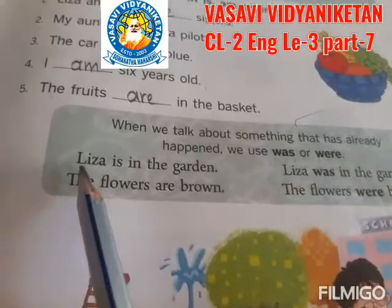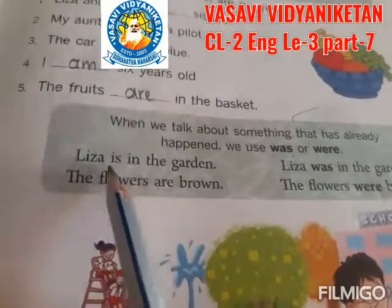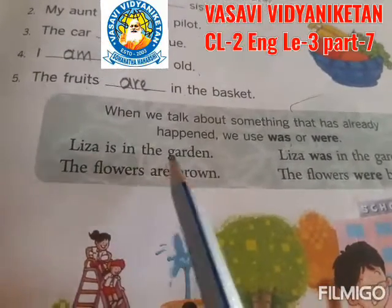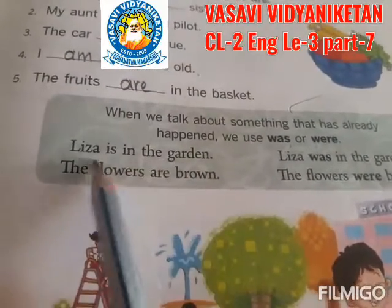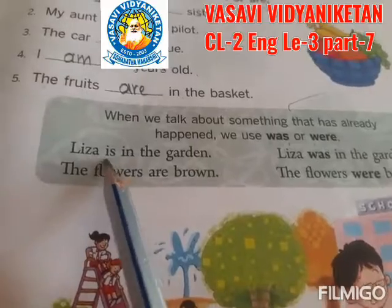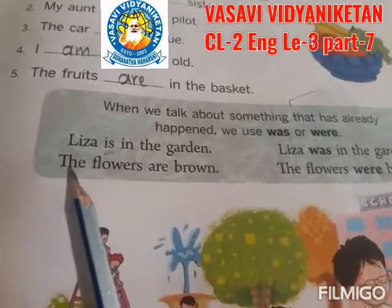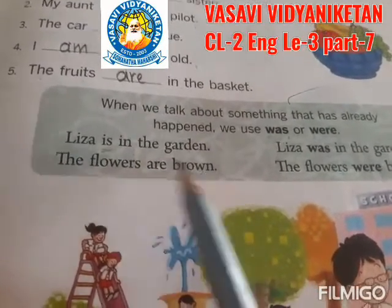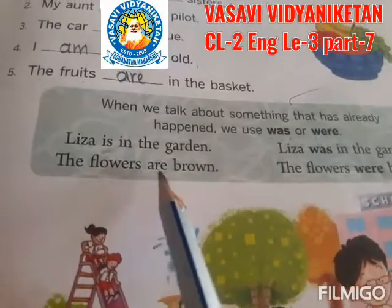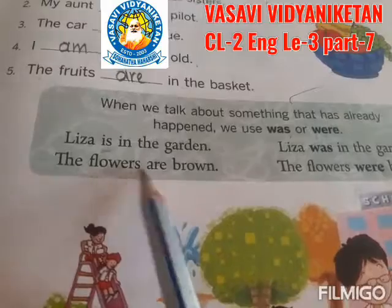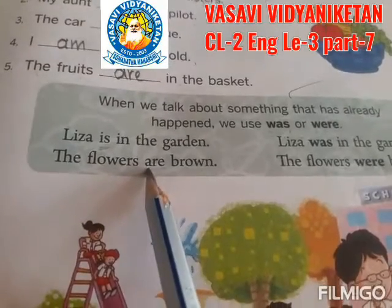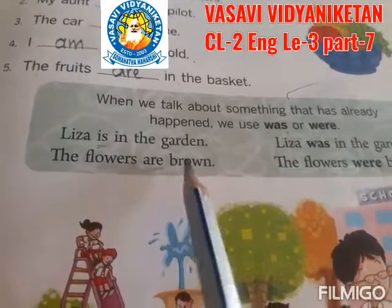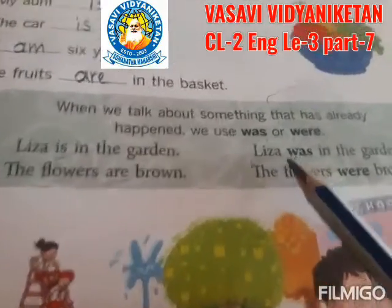See here. 'Lisa is in the garden.' Present — she is in the garden, so we use 'is' here. 'The flowers are brown.' Present — flowers is plural, so we use 'are' here.